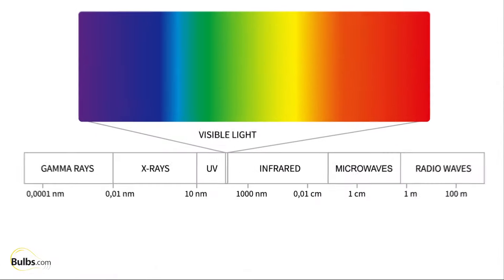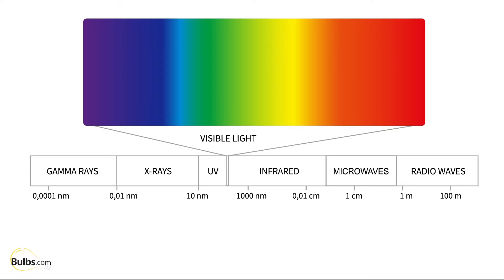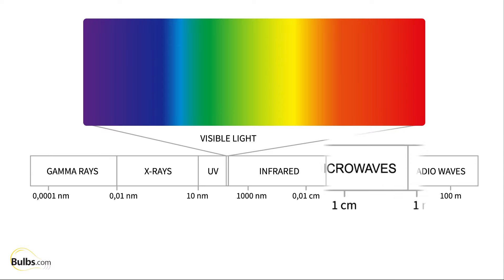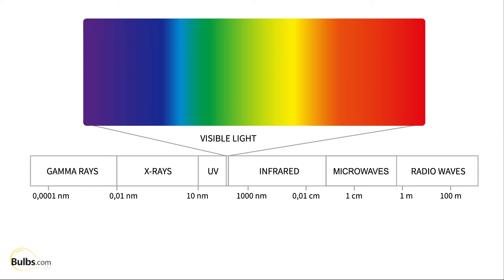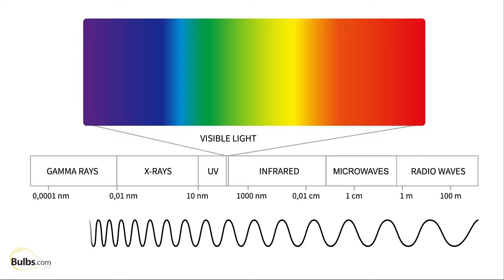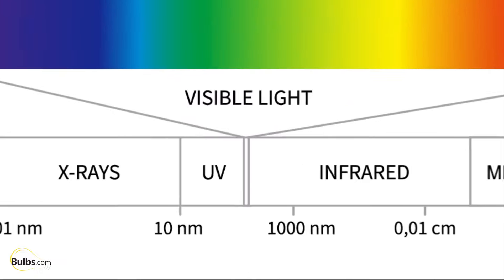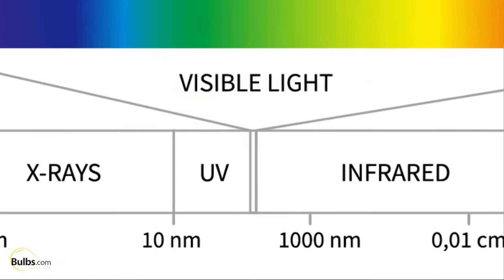Ultraviolet, or UV light, is part of the electromagnetic spectrum, which includes radio waves at one end of the spectrum and gamma rays at the opposite end. When organized by wavelength, UV light falls between visible light and x-rays.